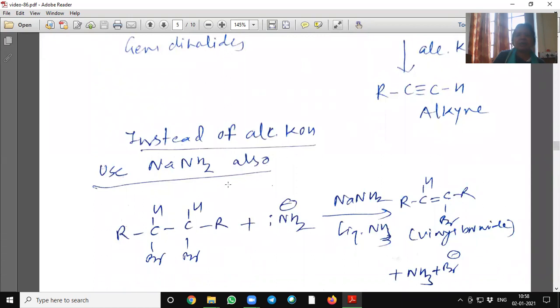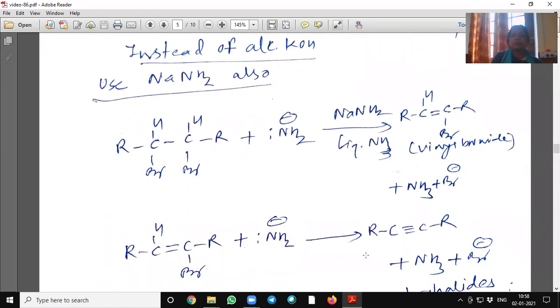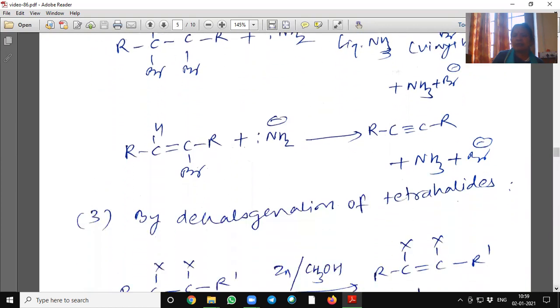First it will give haloalkene and then further on dehalogenation in presence of alcoholic KOH, it will give alkyne. Instead of alcoholic KOH, we can use sodamide also in presence of liquid ammonia. It will also dehalogenate. See here, it will first give vinyl chloride and then on further reaction with sodium amide, it will give alkynes.